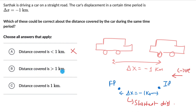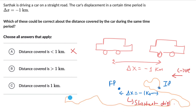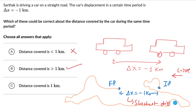Option B says distance covered is more than 1 kilometer. Let's think about a scenario. Let's say the car started from the initial position, then went all the way, followed some path, went a little back, then again came forward, went much ahead, then came back to the final position. Even in this case, the displacement is still minus 1 kilometers, because displacement only depends on the initial and the final position — it does not depend on the path. So option B can be correct, because distance traveled can be more than 1 kilometer.